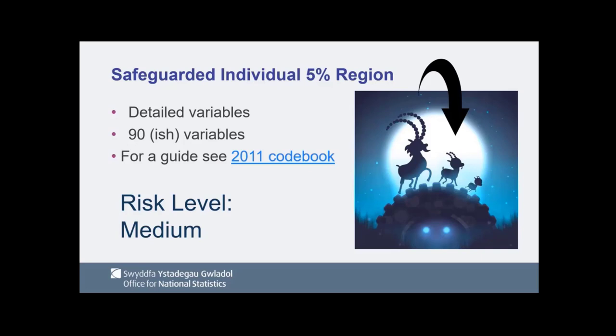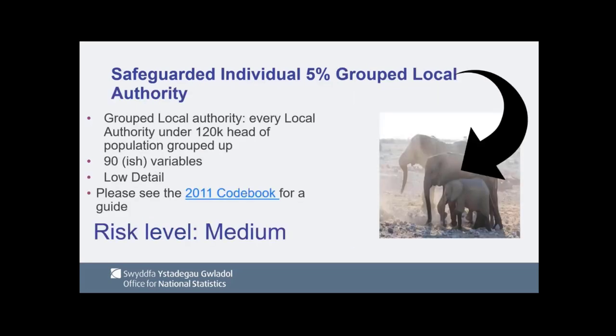We're currently doing the work on the 5% safeguarded individual file at regional level with detailed variables — around 90 variables with more detail in age ranges. The risk level is medium. You shouldn't be able to deduce anything using public knowledge from this, and of course everyone is signed up to not trying as well, which is one of the major protections on the datasets.